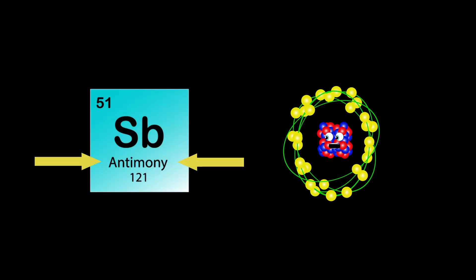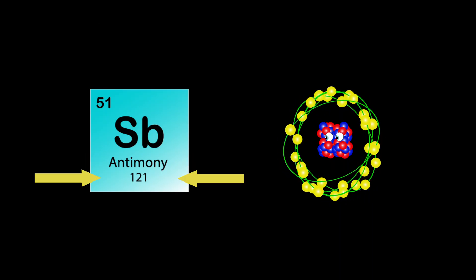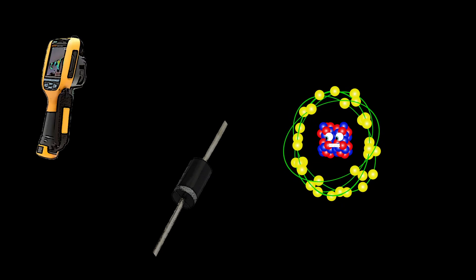I'm Antimony, my atomic number is 51. My atomic mass is 121, Sb is my symbol, I'm not done. I'm used in the electronics industry to make some semiconductor devices like infrared detectors and diodes, you see.